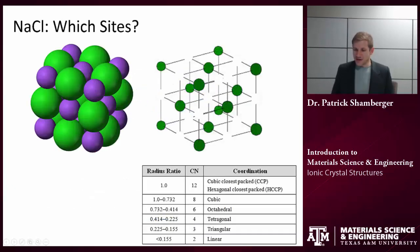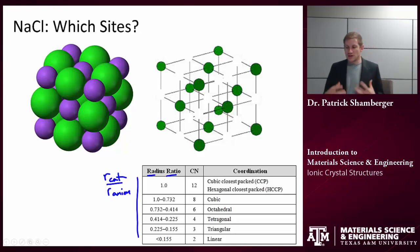Let's think about this in terms of sodium chloride. We can think about this in terms of the radius ratio of the cation to the anion. We can do this because we know that if we have an anion lattice, for example if we have an FCC lattice,